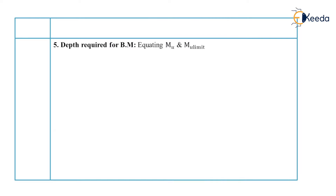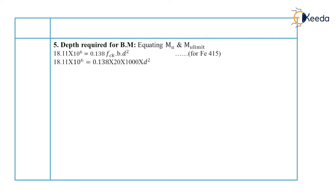Now we calculate the required depth by equating bending moment to the limiting moment of resistance. Taking the maximum bending moment in the X direction — 18.11 × 10⁶ N·mm — and using the MU limit formula for Fe415 steel: 0.138 × Fck × b × d², the required depth is 81 mm. Since our assumed effective depth is 180 mm, the section is adequate.